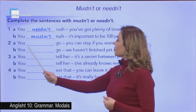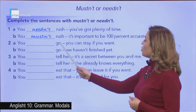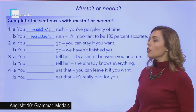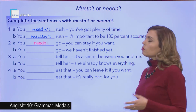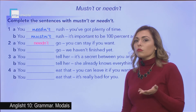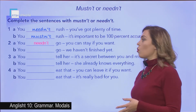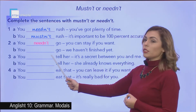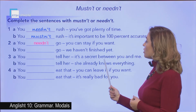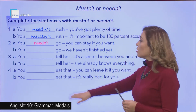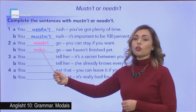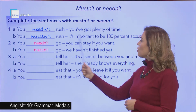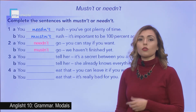Number two: 'You ___ go. You can stay if you want.' You can stay or you can leave, so you needn't go. Or, 'You ___ go. We haven't finished yet' — here we have an obligation, so you mustn't go because we haven't finished. Whereas in the first case you can choose either to stay or to leave — that's the difference.